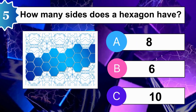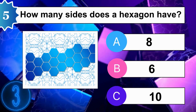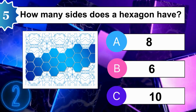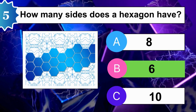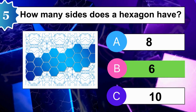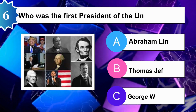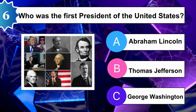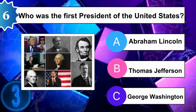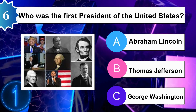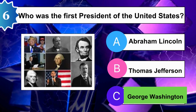How many sides does a hexagon have? B is correct. Who was the first president of the United States? C is correct.